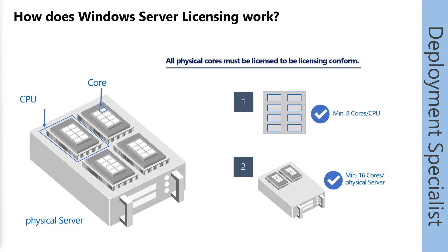If you activate hyper-threading — which is recommended for Azure Stack HCI — you see double the amount of logical CPUs, but you don't focus on logical CPUs for licensing, only the physical cores count. If you disable physical cores, you can reduce your costs for the Azure Stack HCI OS, but not for the number of physical Windows Server licenses if you use bring your own license.